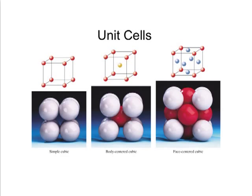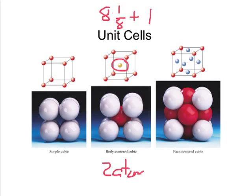Now, how many atoms are inside a body-centered cubic unit cell? I have eight corner atoms, each contributing one-eighth of themselves, plus the one atom in the dead center of the cube — plus one more. Assuming they're all the same atom, a body-centered cubic unit cell has two atoms per unit cell.